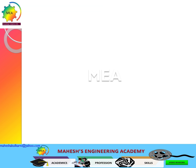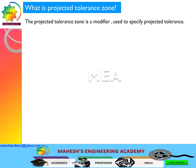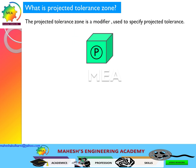What is a projected tolerance zone? The projected tolerance zone is a modifier used to specify projected tolerance. The modifier is represented by P, and it is called out in the feature control frame.